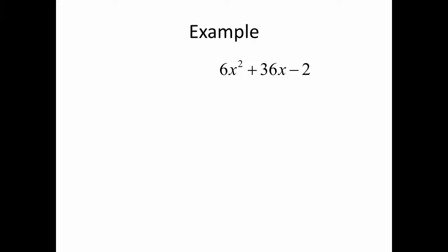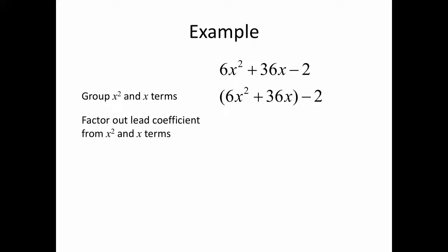Let's take a look at another example: 6x squared plus 36x minus 2. We'll group the x-squared and x terms, then factor out the lead coefficient from those terms and leave an open space to complete the square. When we factor 6 out of 6x squared plus 36x, we're left with 6 times x squared plus 6x plus that empty space.